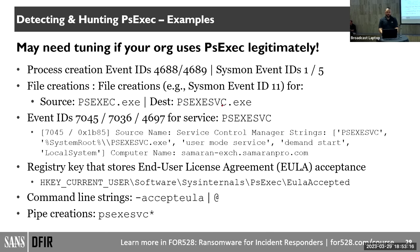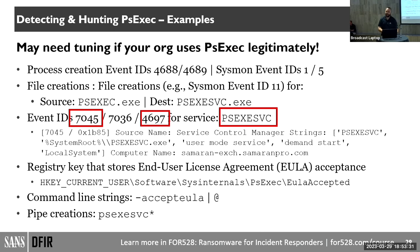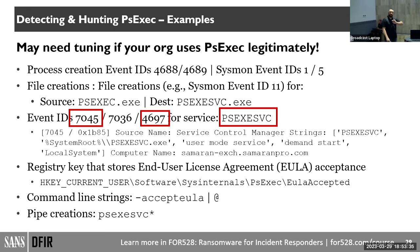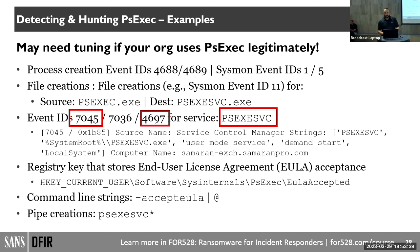That service is typically going to be called PSEXESVC. Remember, you push that file over via SMB and then create the service. Event IDs — especially 7045 — and its near-duplicate will show 'a service was installed/created,' including the handler and service name, which you can use to identify PSExec activity.